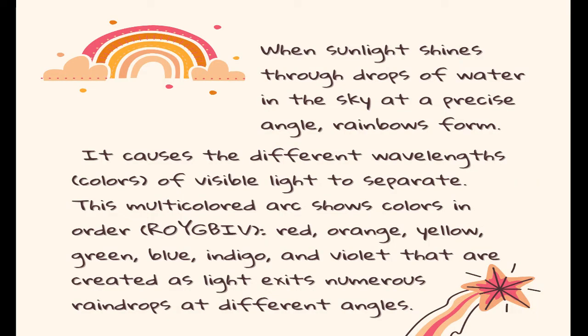When sunlight shines through drops of water in the sky at a precise angle, rainbows form. It causes the different wavelengths or colors of visible light to separate. This multicolored arc shows colors in order: red, orange, yellow, green, blue, indigo, and violet — created as light exits numerous raindrops at different angles.